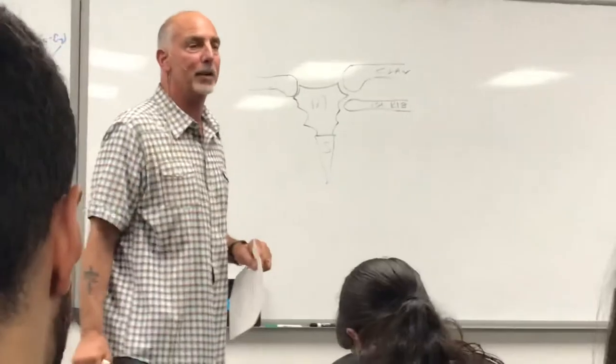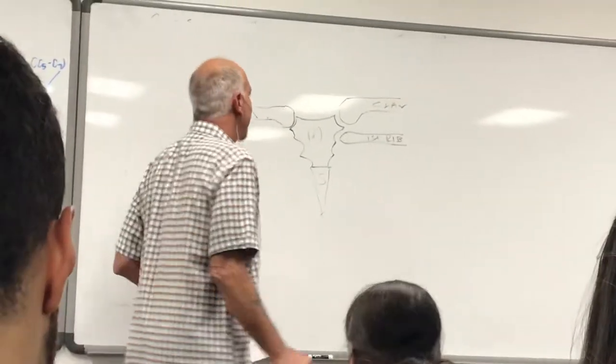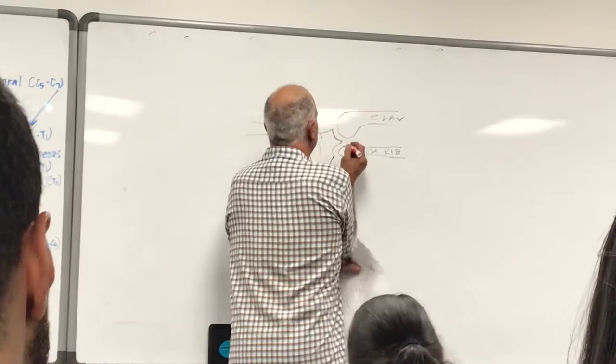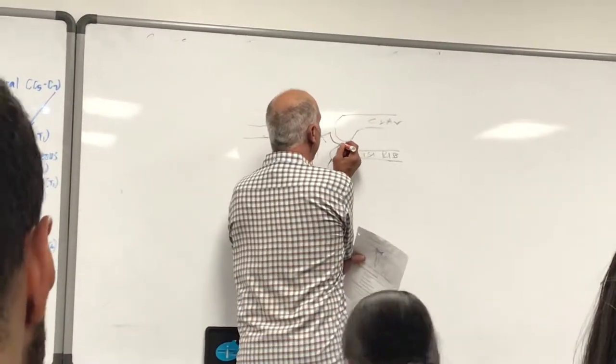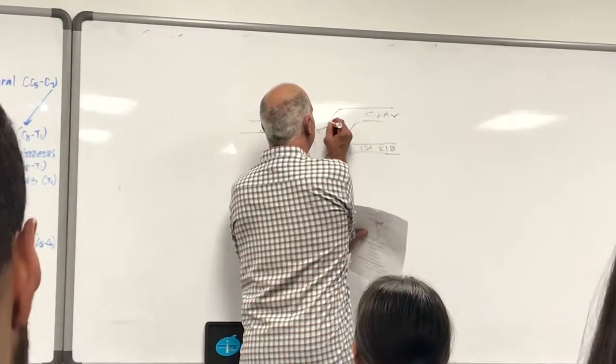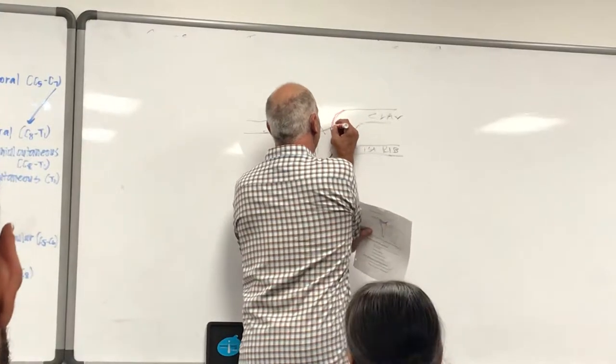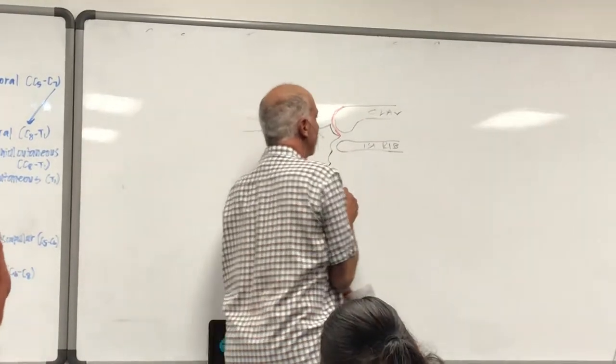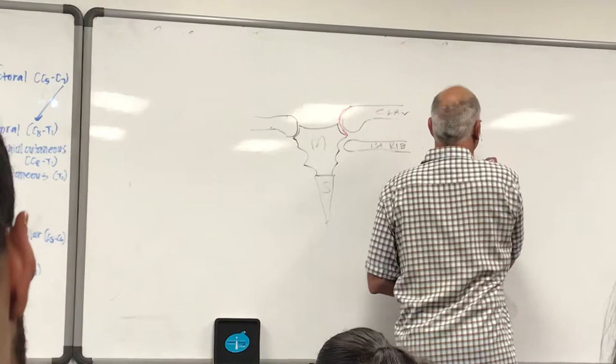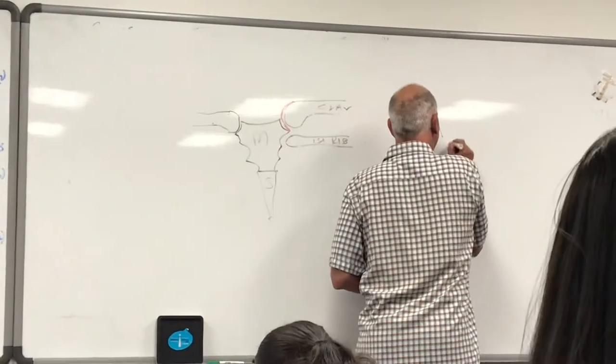We want to draw in the sternoclavicular disc. It attaches from the inferior surface of the clavicular notch up to the superior surface of the head of the clavicle. I'm just going to abbreviate this SC disc.